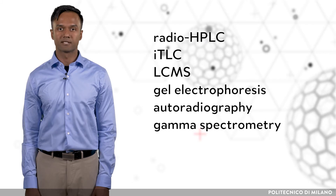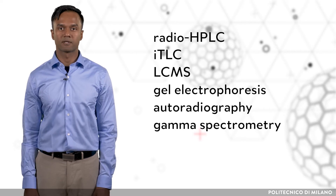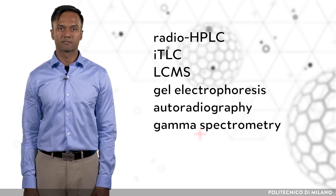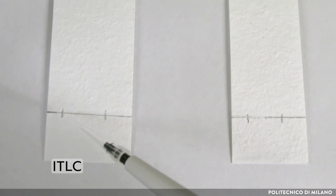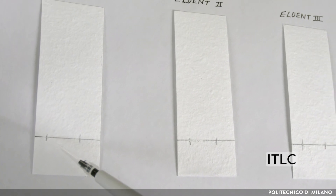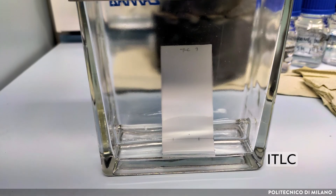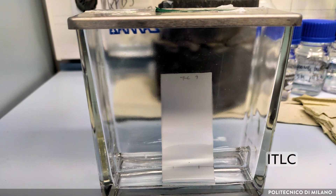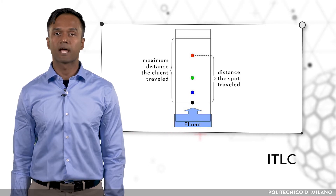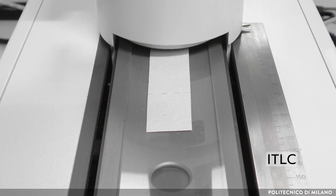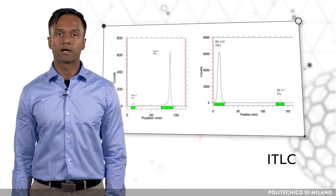Several techniques are used for quality control, including RadioHPLC, instant thin layer chromatography (ITLC), liquid chromatography mass spectroscopy (LCMS), gel electrophoresis, autoradiography, and gamma spectrometry. In ITLC, thin strips of stationary phase are spotted with analyte and mobile phase travels by capillary action, leading to separation of individual components due to differences in polarity. The ITLC scanner uses a gas-filled proportionality counter to scan the whole TLC plate at one time, showing the number of radiolabeled species and whether there are any free radioisotopes in the sample.